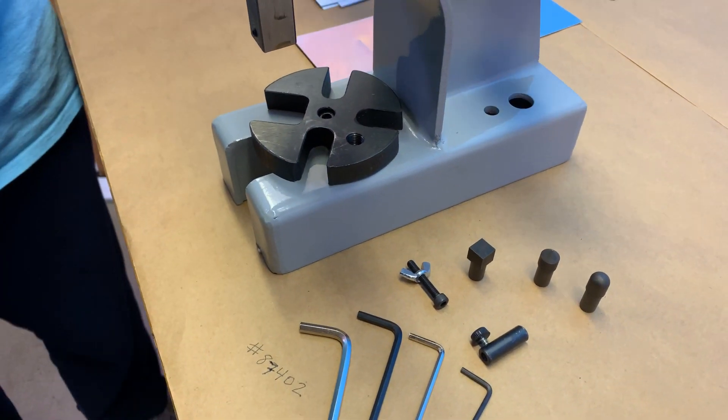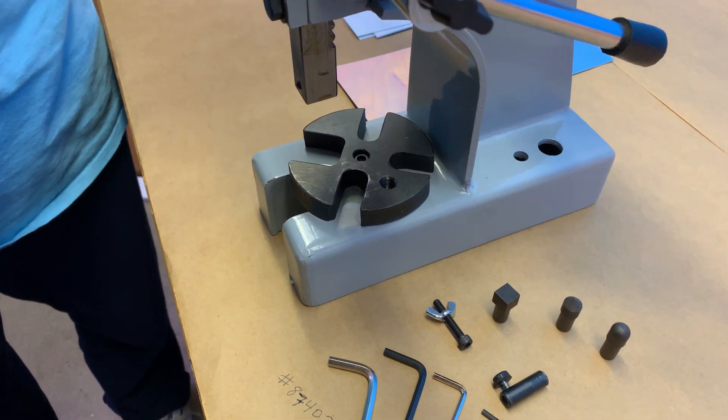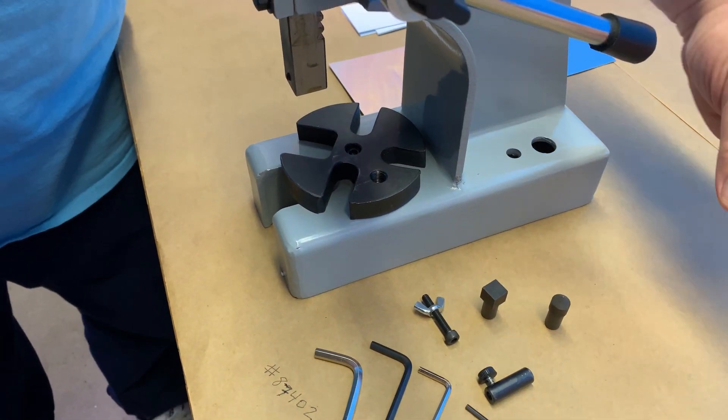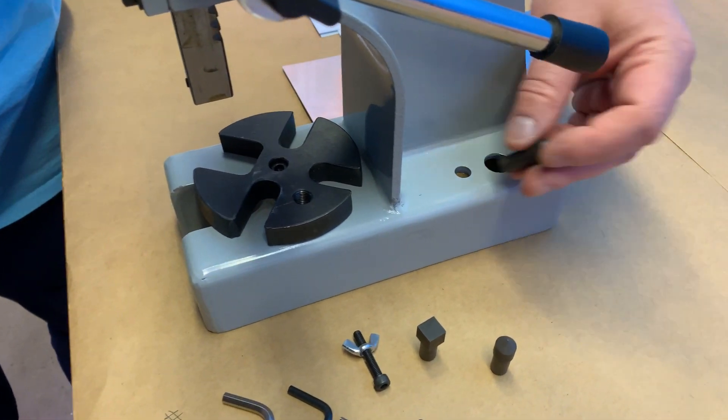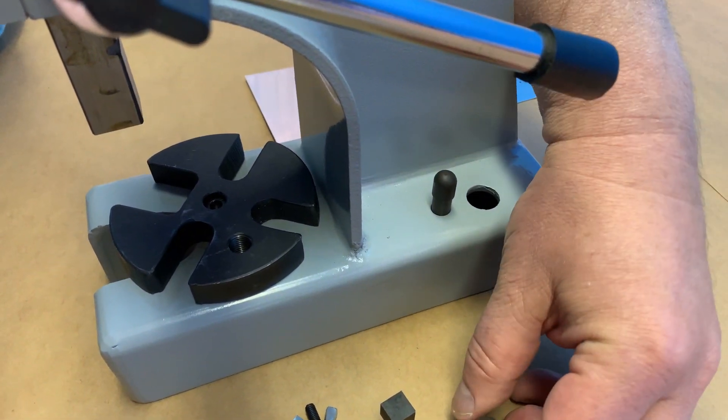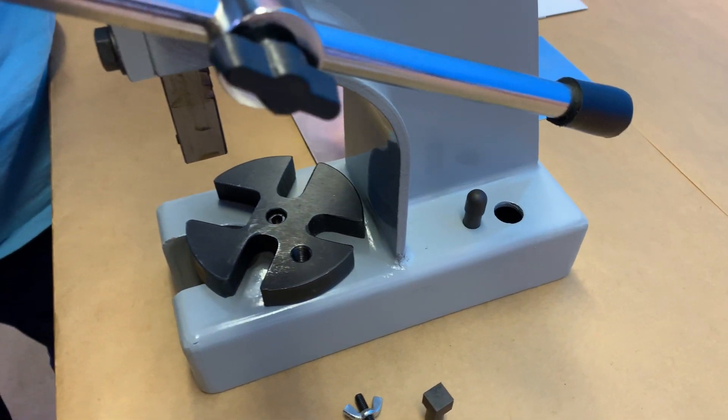What makes this arbor press unique and exclusive for Micromark? Number one, you're not going to be searching for your tooling, because I've designed it with on-board storage for the punches on both the left and the right side.